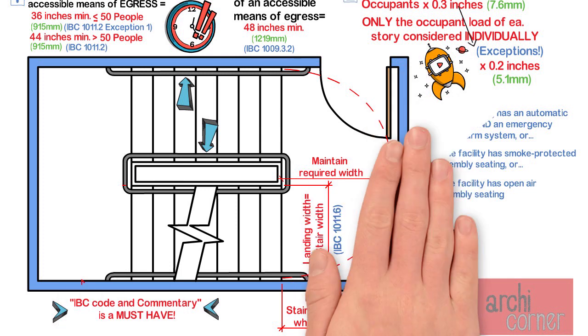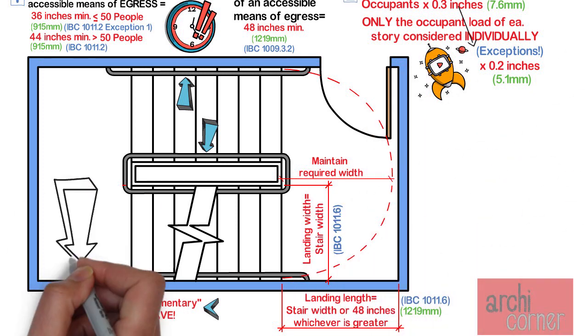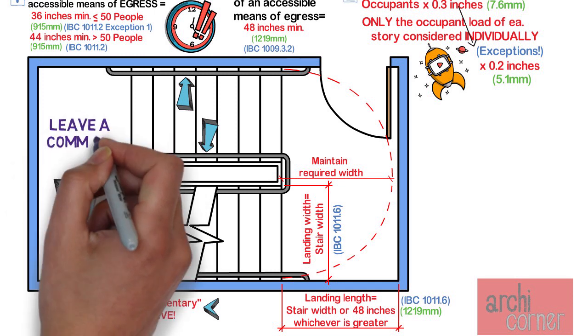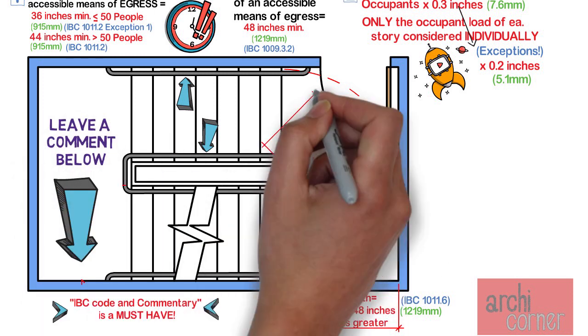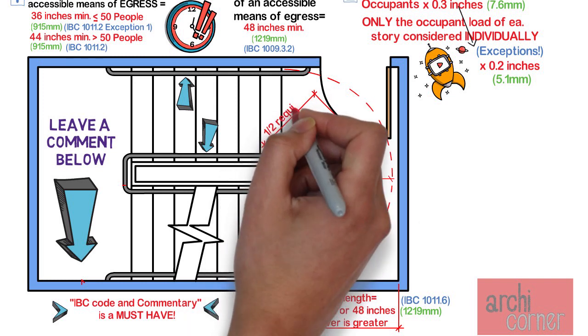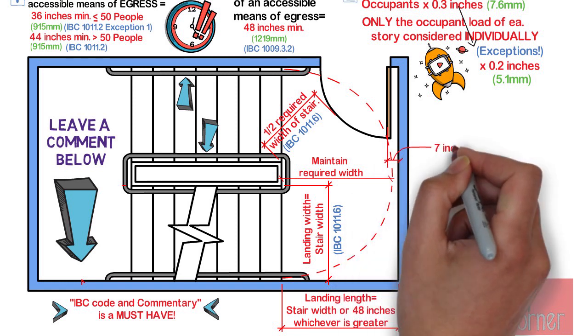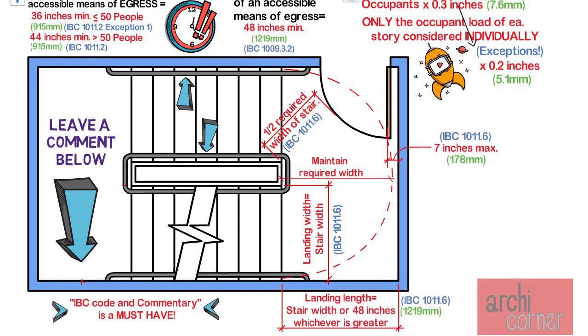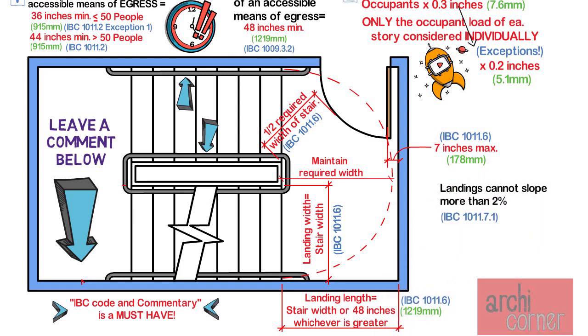Was this news to you? I'm interested in hearing your comments. Leave a comment below if this was new to you. Anyway, moving on. If you have a door at the landing, the door must not reduce the landing to less than one half of the required width. When fully open, the door must not project more than 7 inches into a landing. And last, in regards to the landings, landings cannot exceed 2% slope.